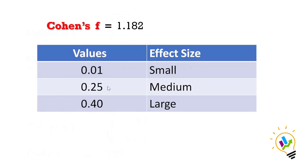Now, if Cohen's value is 1.182, we can see the effect size. If this value is 0.01, it is small effect. More than 0.25, it is a medium effect size. And if it is more than 0.4, it is large effect size.